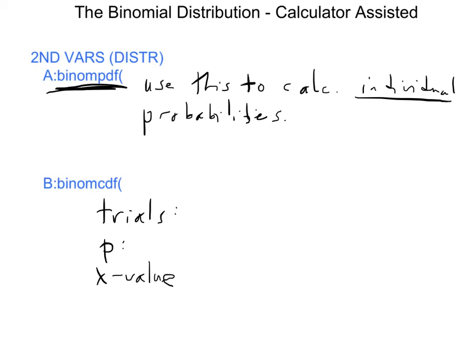In trials, you're going to put N. In other words, you're going to put the number of trials you have. So if you're rolling a die 17 times, you'll put in 17. If you're shooting a basketball 12 times, you'll put in 12. P is where you put the probability of success. For X value, you put the R value that you're looking at. For binom PDF, it's going to find the probability of R.